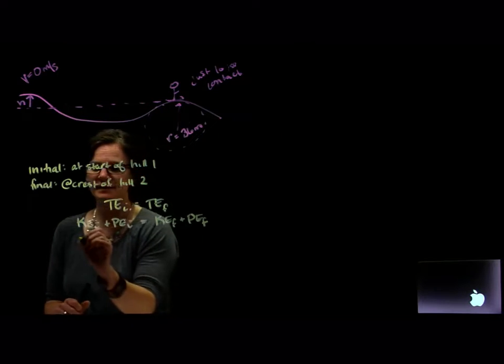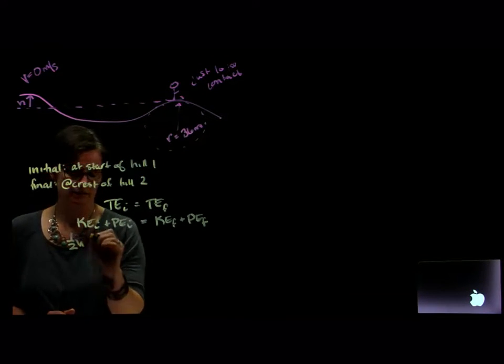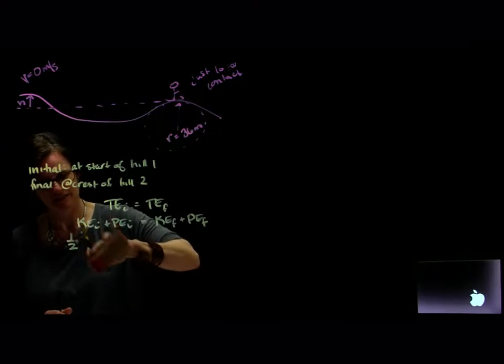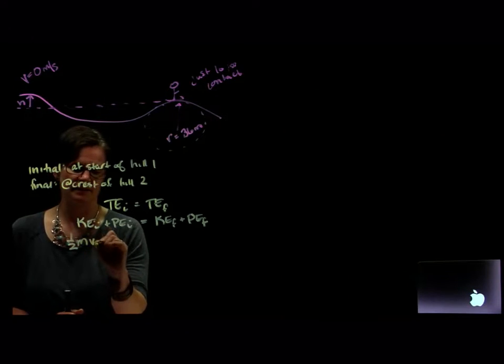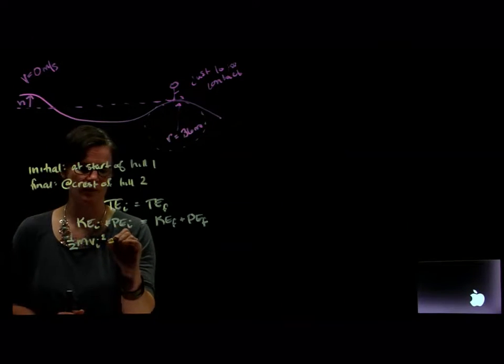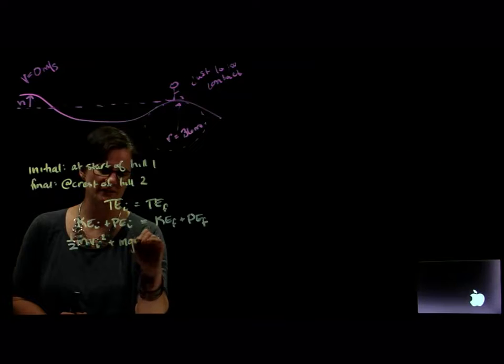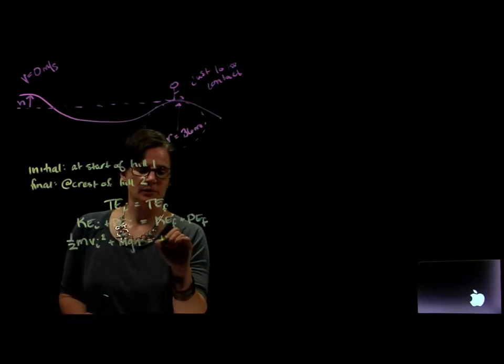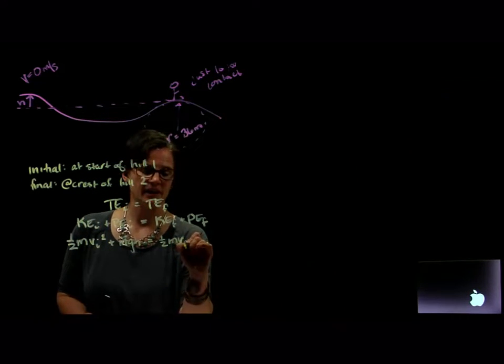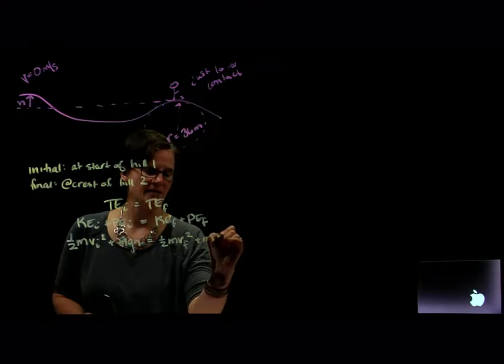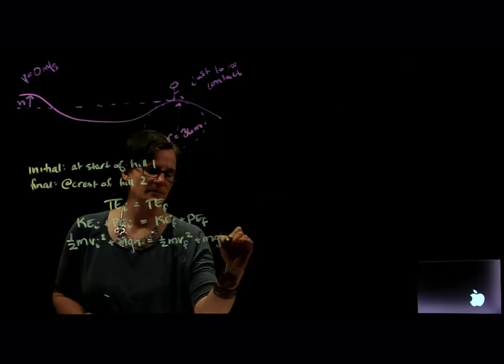Our kinetic, of course, is one half the mass times the initial speed squared, plus the mass times the gravity times the height, plus one half the mass times the final speed squared, plus the mass times the gravity times the height.